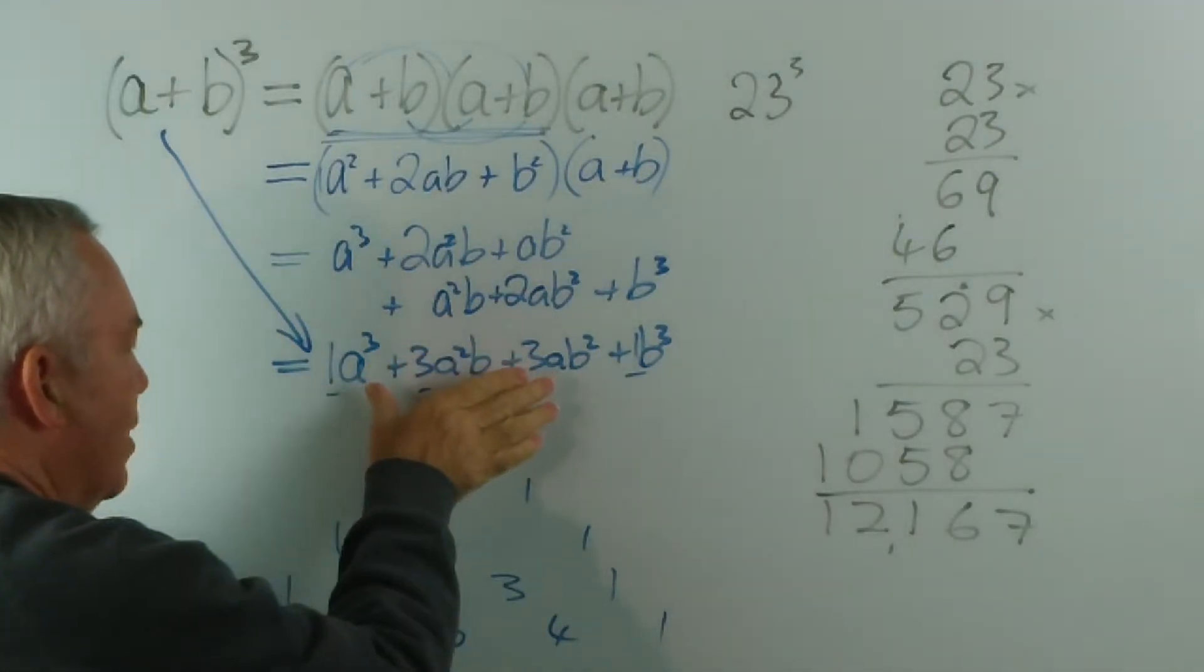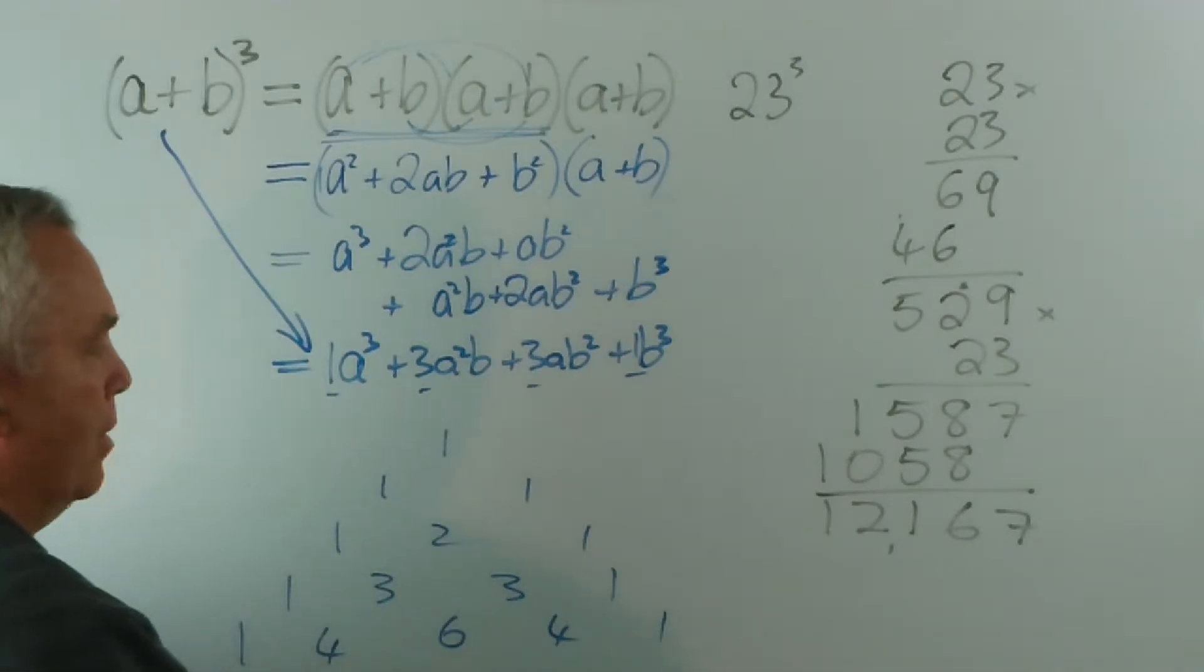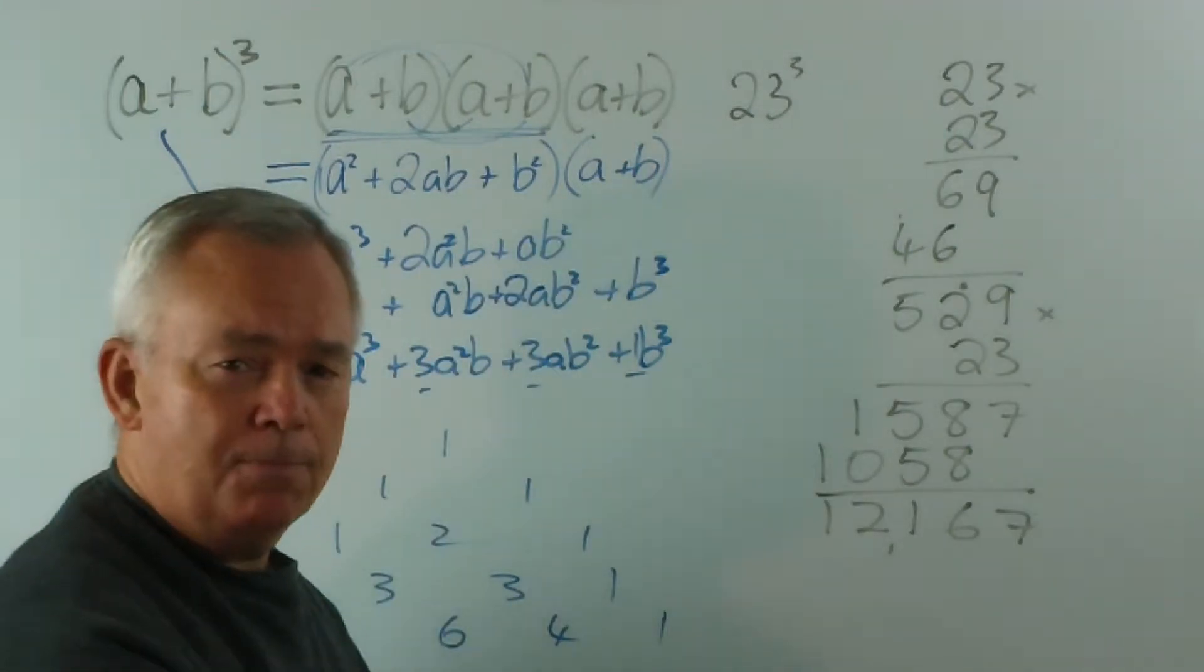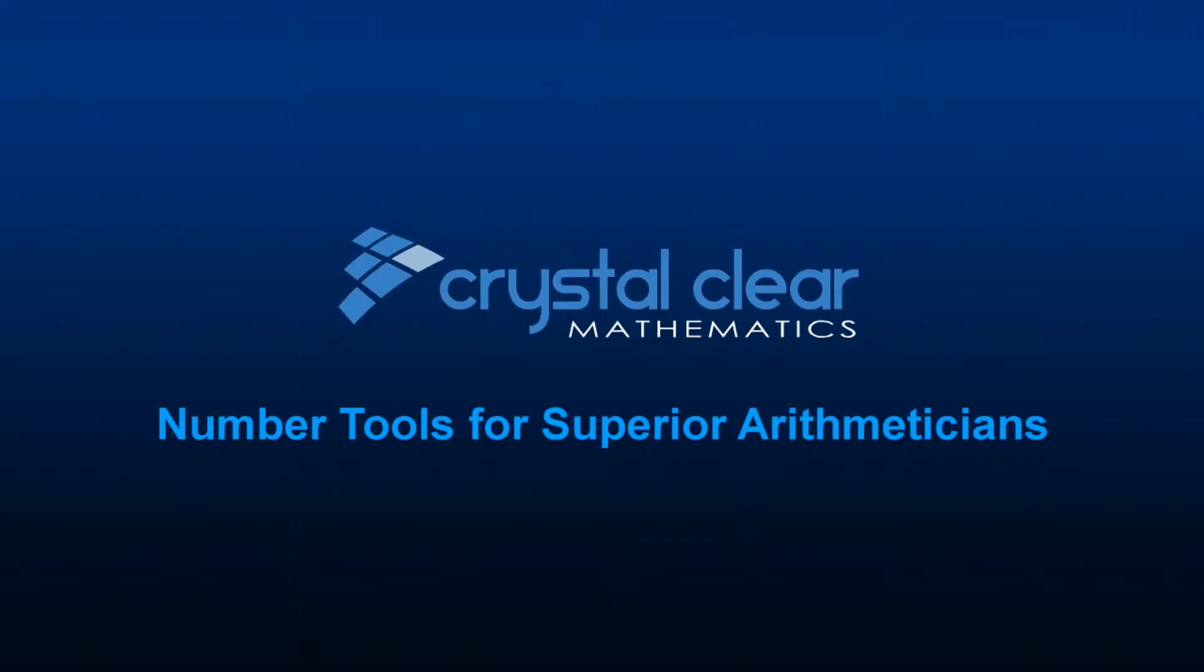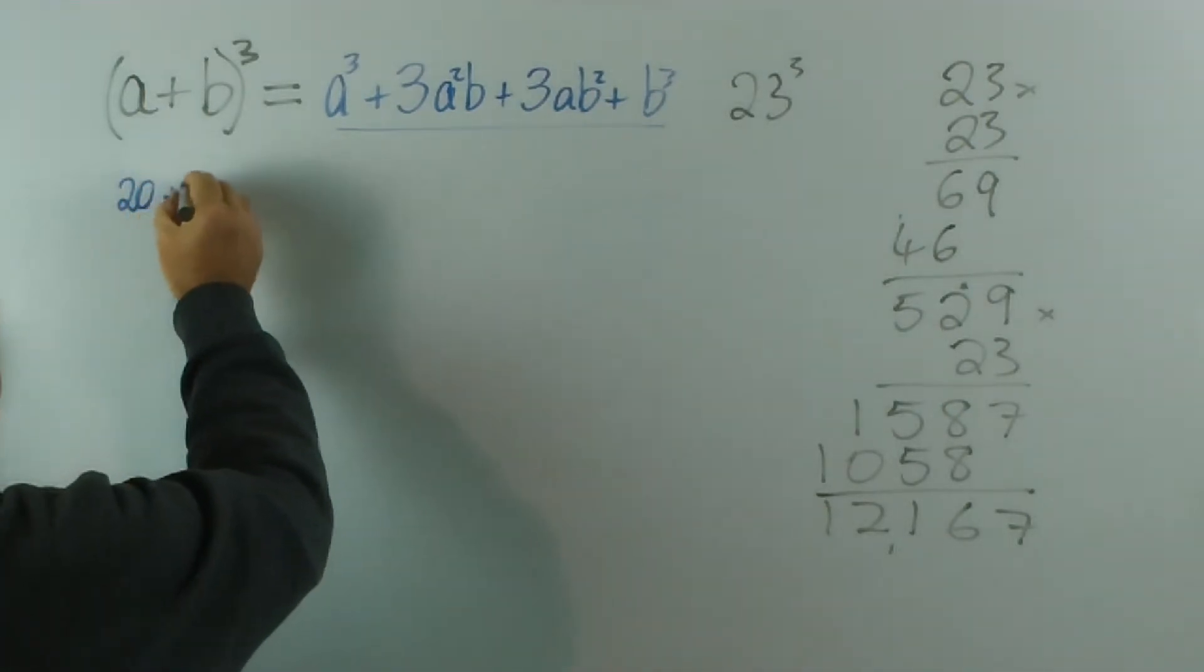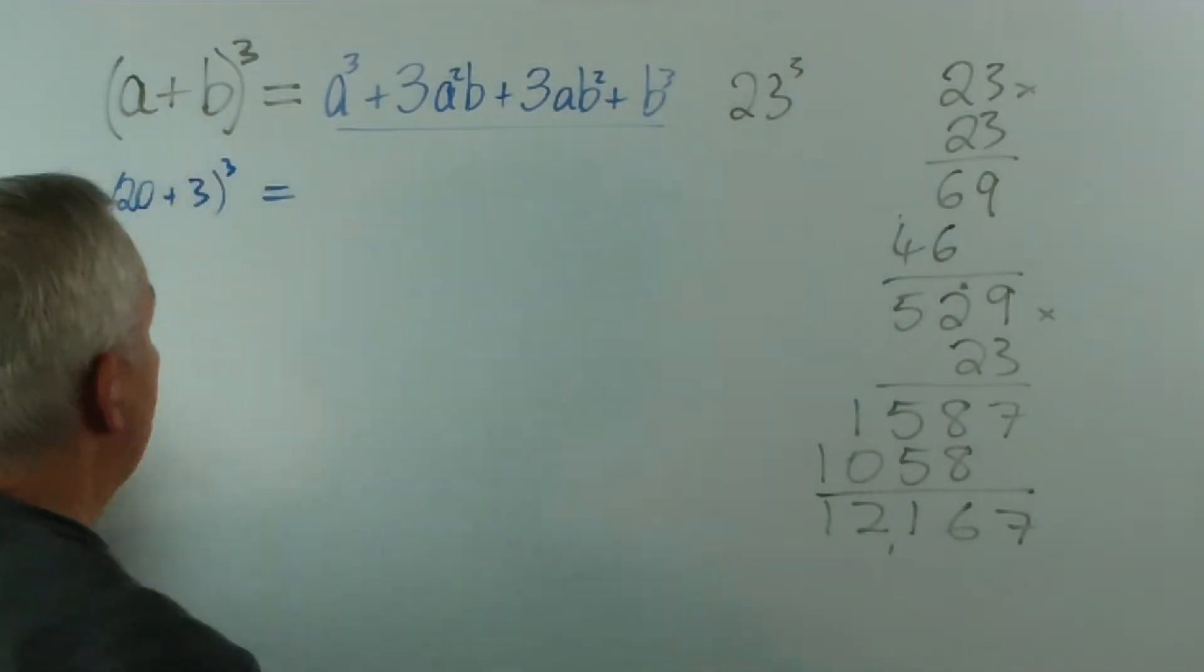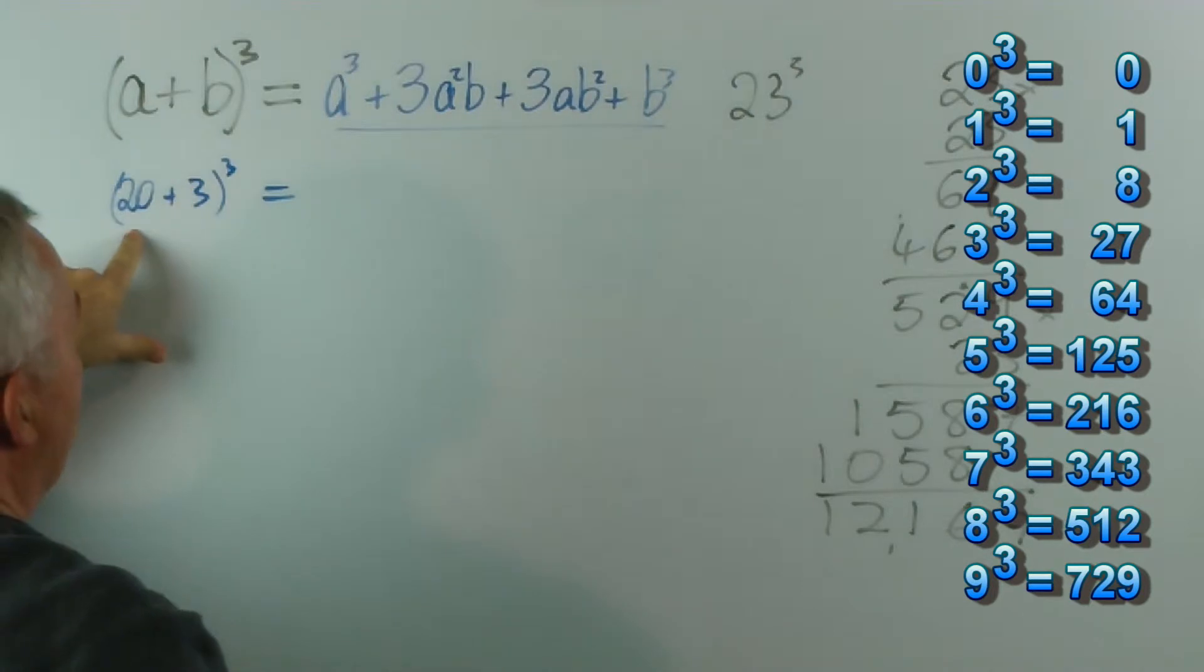How do we use this to make life a bit easier for ourselves than this? Well, I'm going to erase this and demonstrate the same result for 23 cubed. If we wish to cube 23, then imagine that we have 20 plus 3 cubed. I'm going to show you a slightly better way of setting it out shortly. The first term is going to be 20 cubed. That's the a value, is 20.